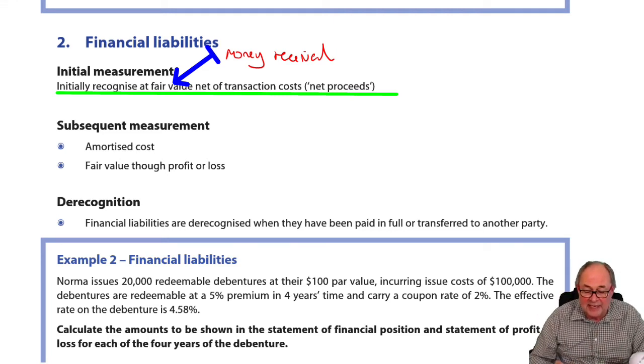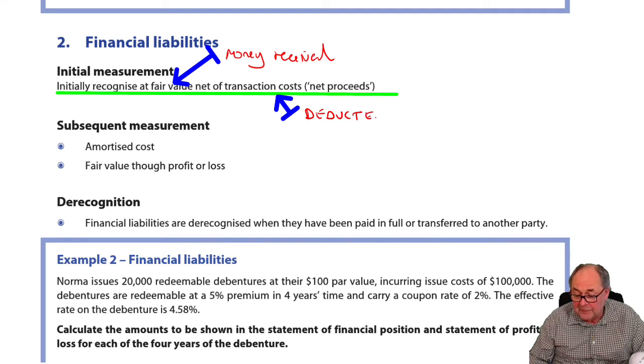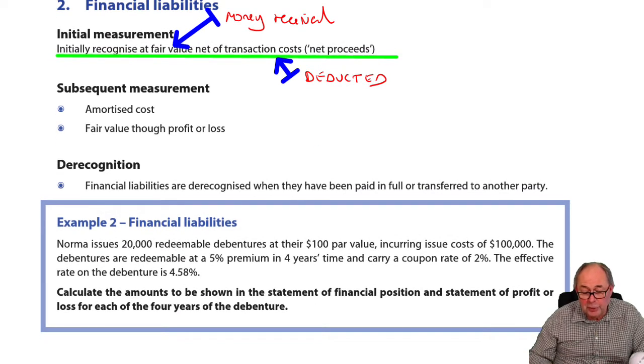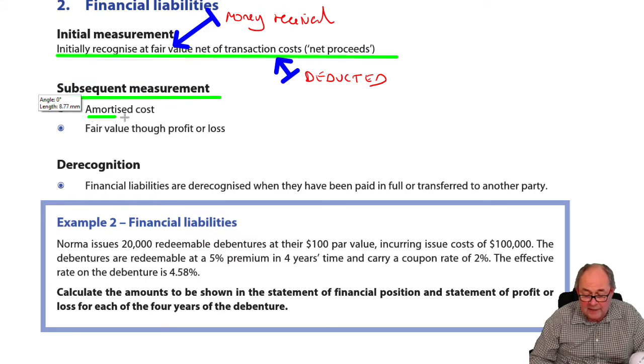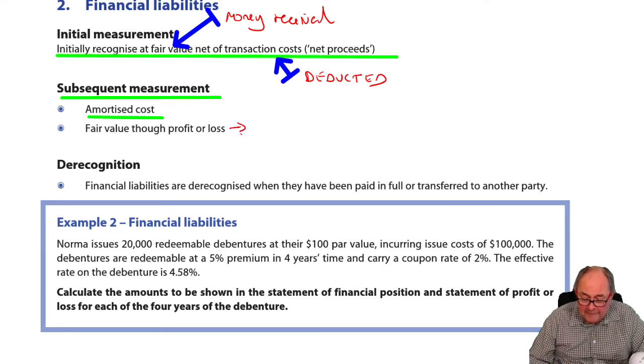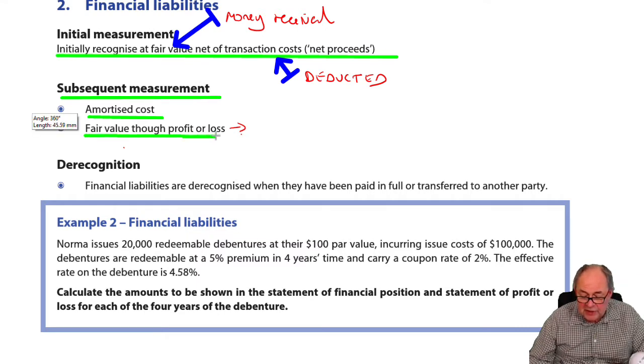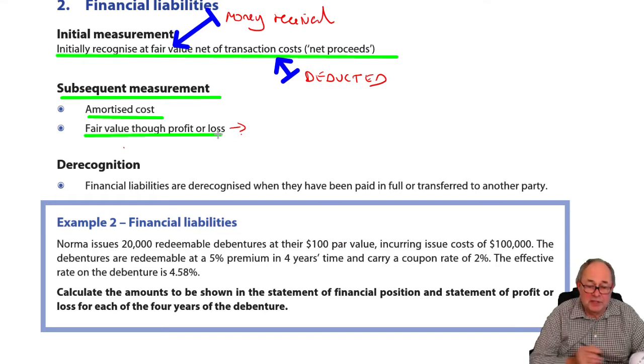So with financial assets, transaction costs are added. With financial liabilities, transaction costs are deducted. We'll see an example of that in just a minute. Usually, financial liabilities are the same as financial assets measured at amortized cost. The one exception that you need to be aware of is that occasionally, it may be more appropriate to measure them at fair value with gains or losses going through the profit and loss.